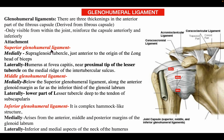The superior glenohumeral ligament attaches medially to the supraglenoid tubercle just anterior to the origin of the long head of biceps, and laterally to the humerus at the fovea capitis near the proximal tip of the lesser tubercle on the medial ridge of the intertubercular sulcus. The middle glenohumeral ligament attaches medially below the superior glenohumeral ligament along the anterior glenoid margin to the inferior third of the glenoid labrum, and laterally to the lower part of the lesser tubercle deep to the subscapularis tendon. The inferior glenohumeral ligament is a complex structure arising medially from the anterior, middle, and posterior margin of the glenoid labrum, and attaching laterally to the inferior and medial aspect of the neck of the humerus.